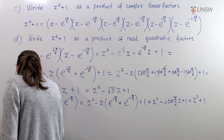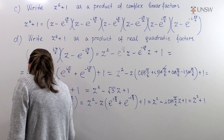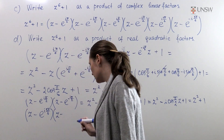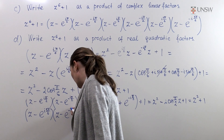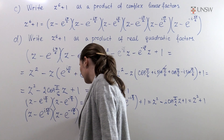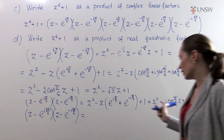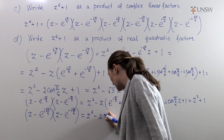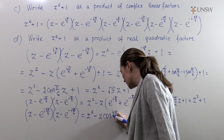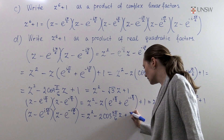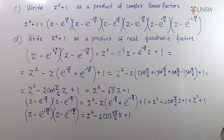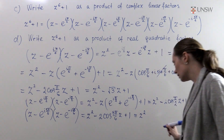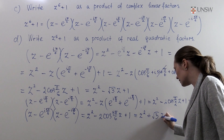Finally we calculate the product of the brackets z minus e to the i5π/6 and z minus e to the minus i5π/6. This is the same form as before but with 5π/6 instead of π/6. And since cos(5π/6) equals minus √3/2, the middle term becomes plus √3·z, so overall we get z squared plus √3·z plus 1.